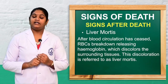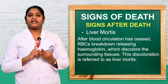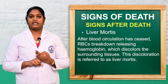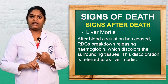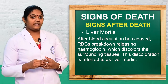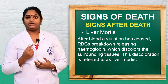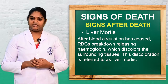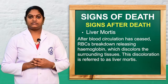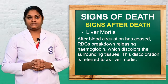The third is livor mortis, which is the discoloration of the body after death. After death, blood circulation stops, the red blood cells break down and release hemoglobin into the surrounding tissues. This causes a bluish discoloration of the body.